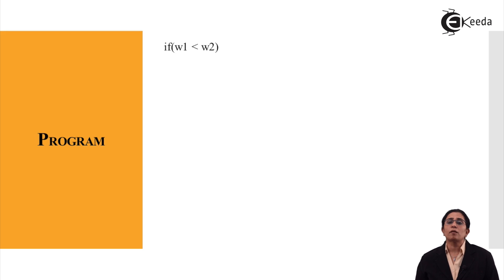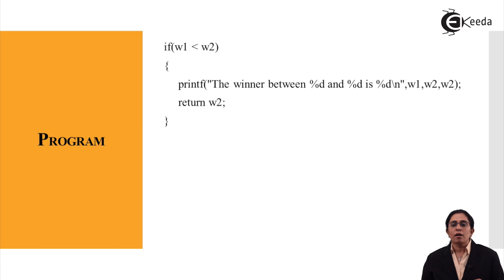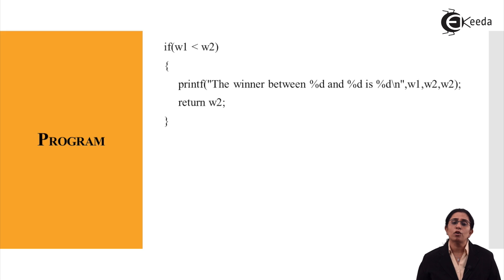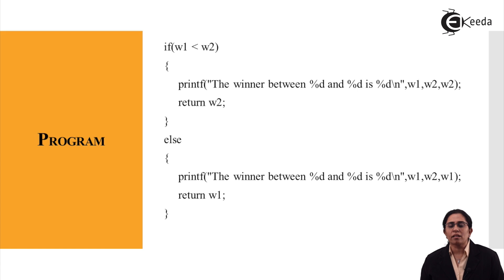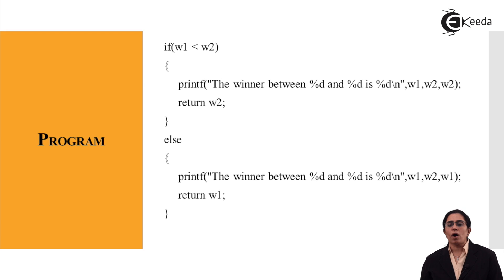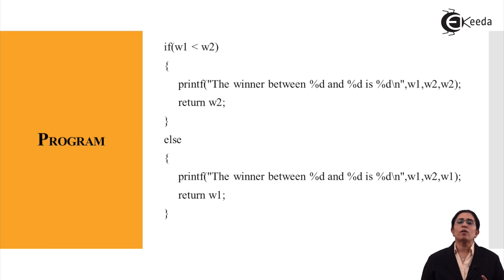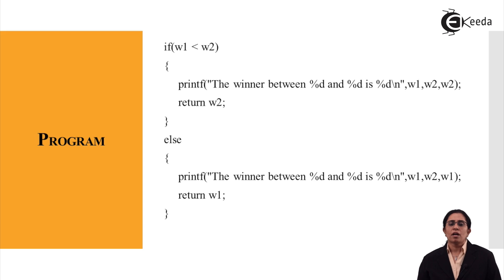If w1 is less than w2 — meaning w2 has won the match — we print the winner between the two is w2 and return w2. Otherwise, we print the winner between the two is w1. For example, if player one and player two are compared and w1 is greater, then player one is declared the winner and returned. This loop then closes and we move to the main program.